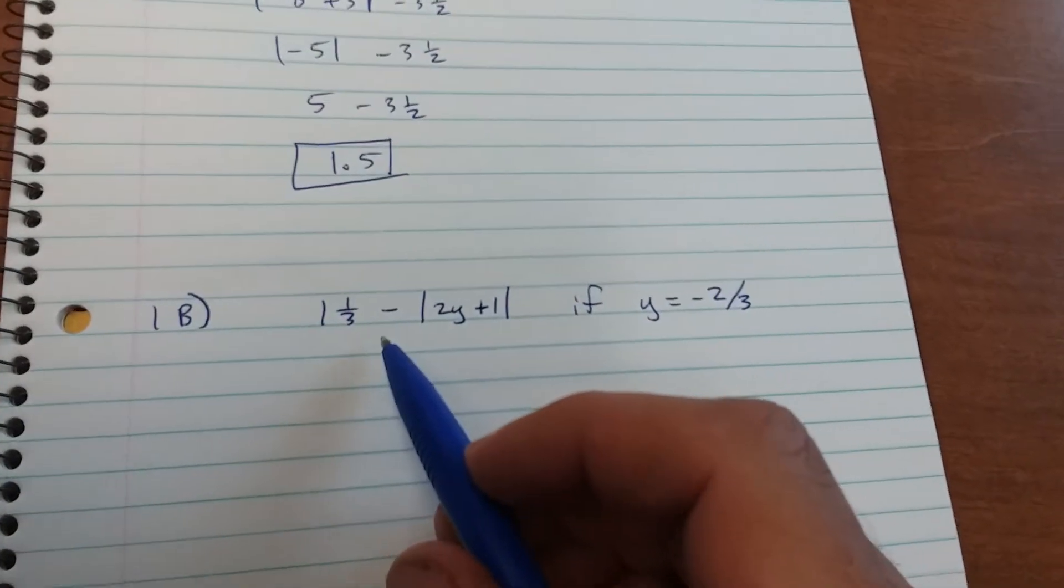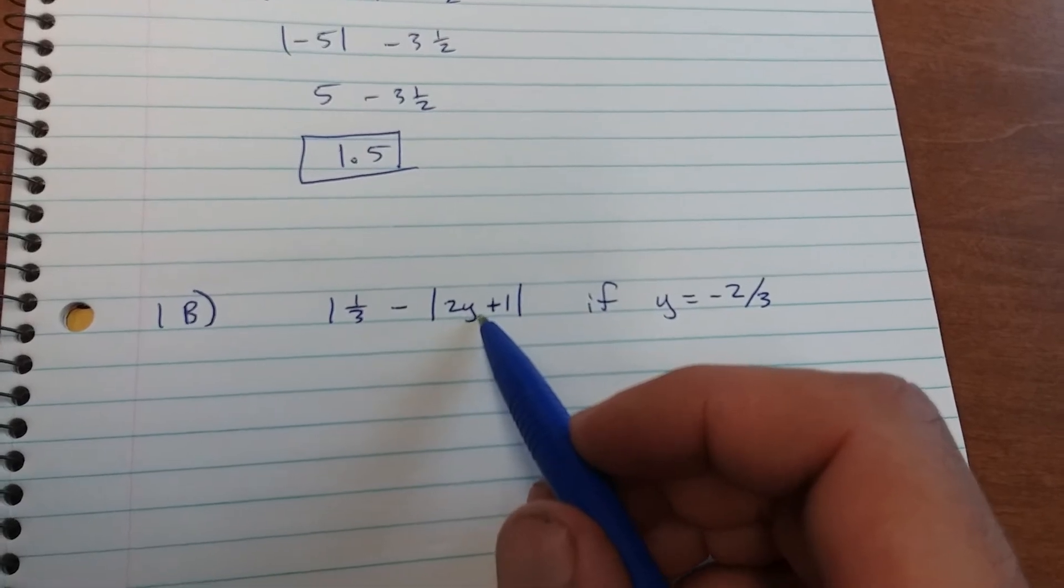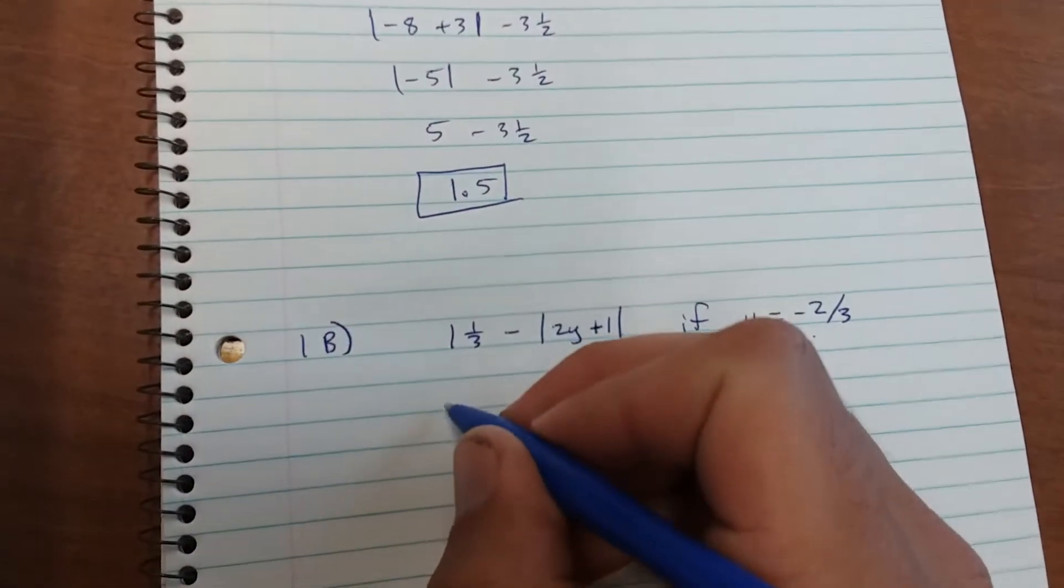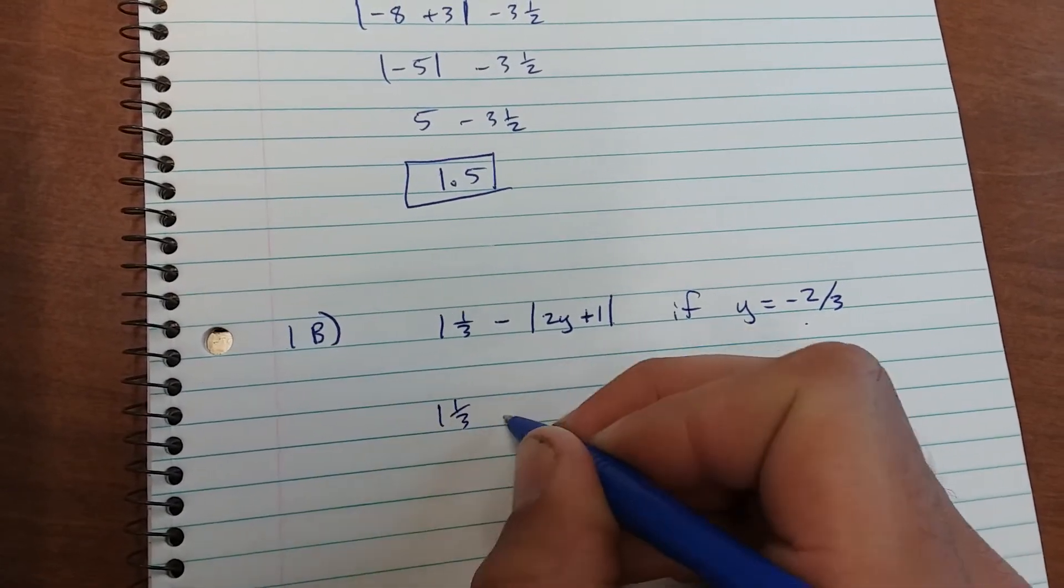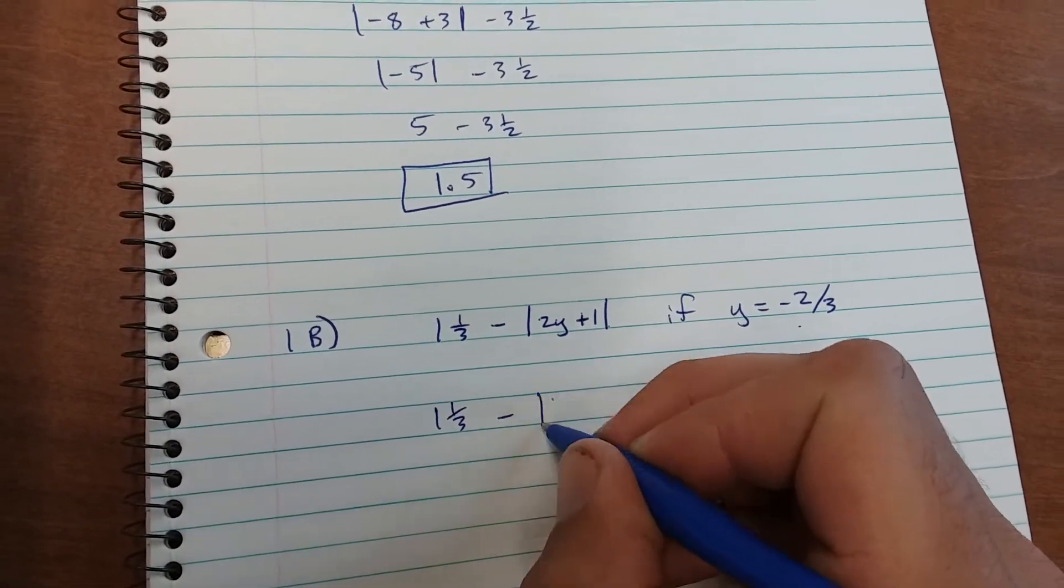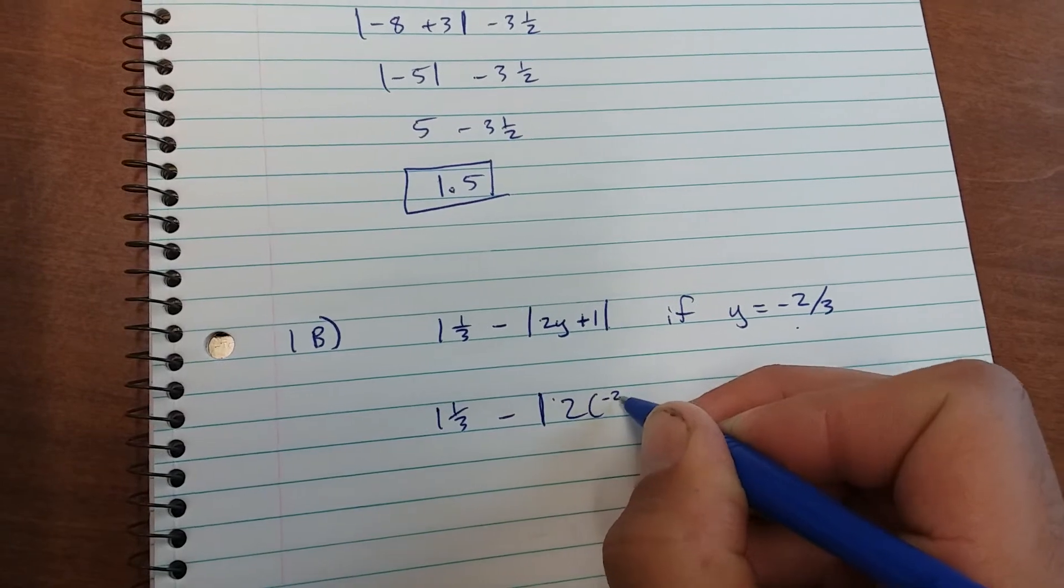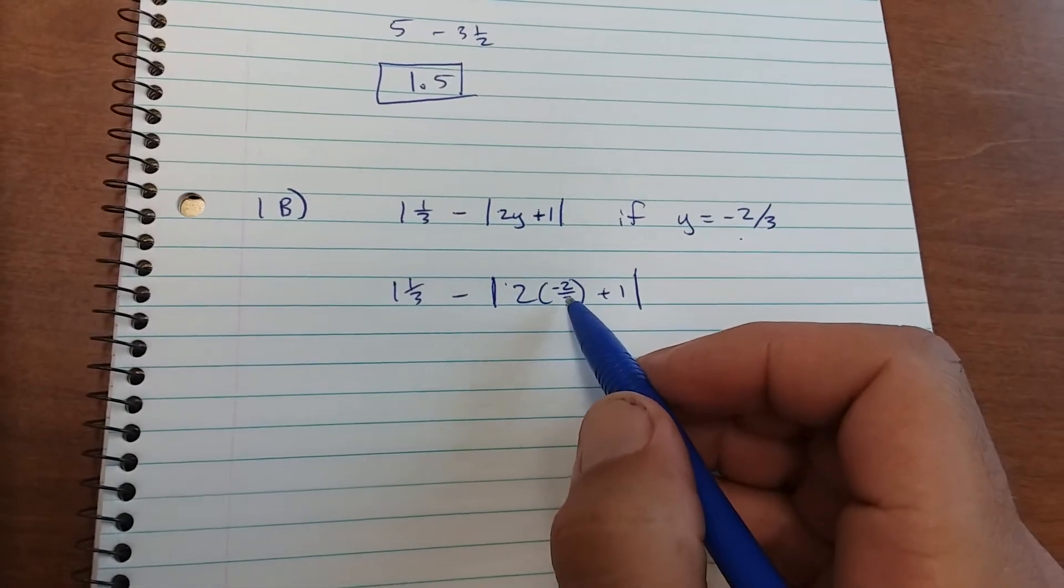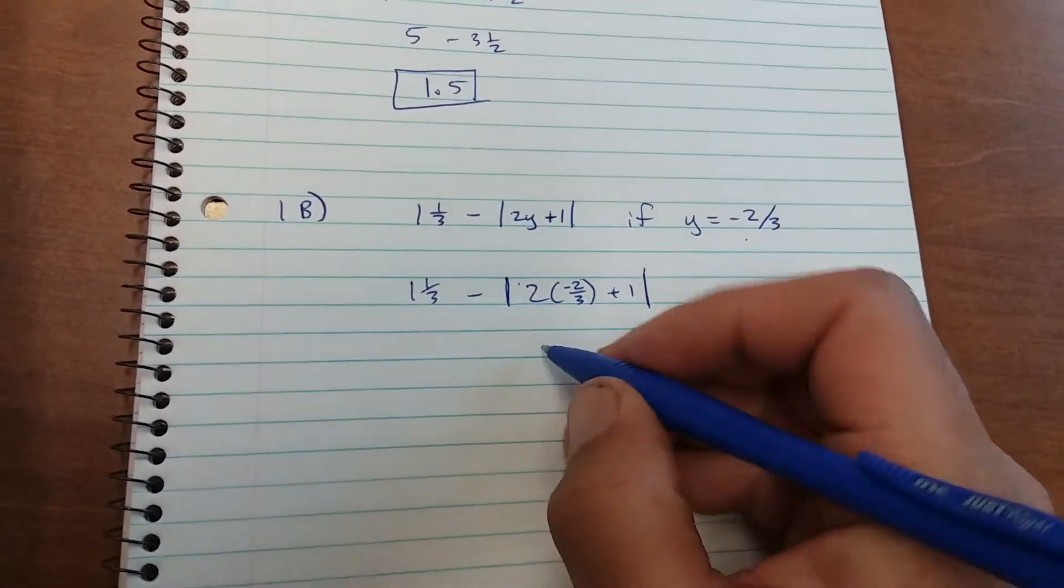Next one. 1 and 1 third minus the absolute value of 2y plus 1. So you're replacing y with negative 2 thirds. You have 1 and 1 third minus the absolute value of 2 times negative 2 thirds plus 1. 2 times negative 2 thirds is negative 4 thirds.